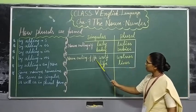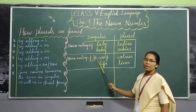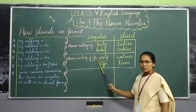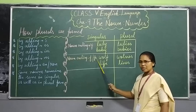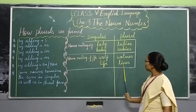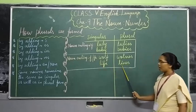Same way, 'life' ends in the letters f-e. So remove the fe and add -ves, giving you 'lives'.